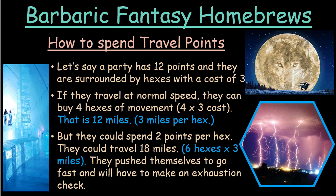Here's the innovative part: they don't have to spend the full three points per hex. They could spend two points per hex to move fast. With 12 points at two per hex, they buy six hexes — that's 18 miles in a day. But pushing themselves to go fast means they'll have to make an exhaustion check.